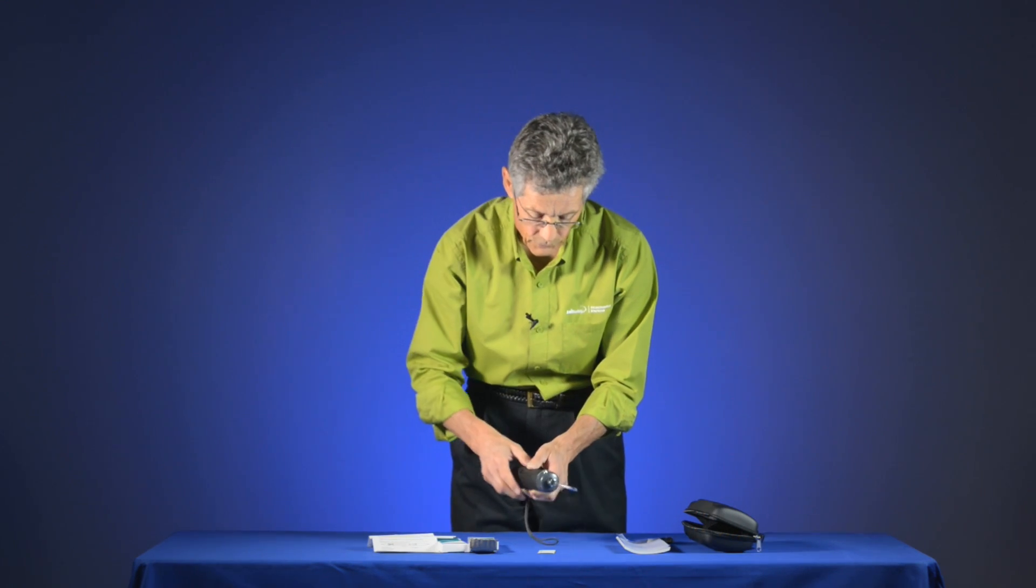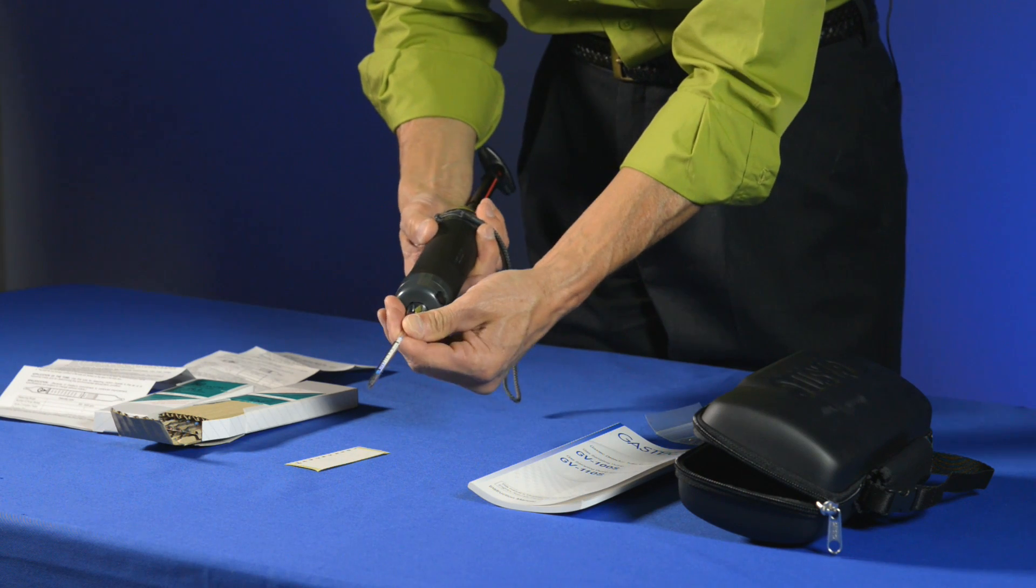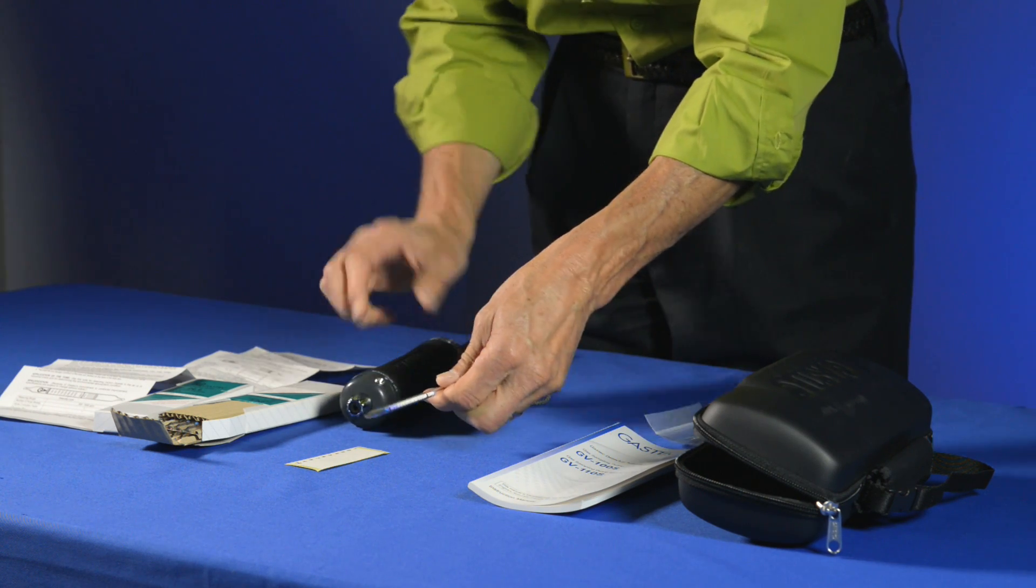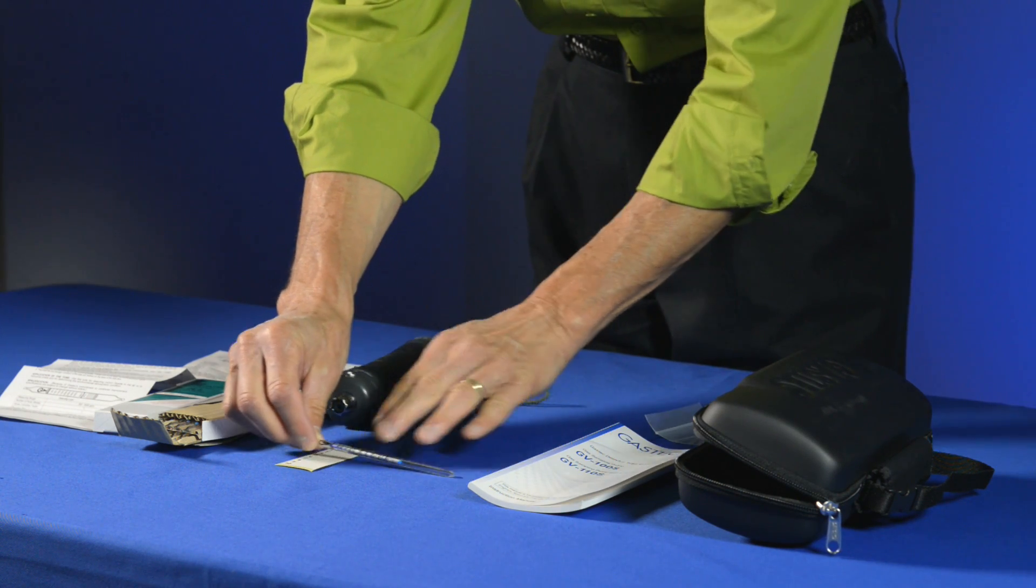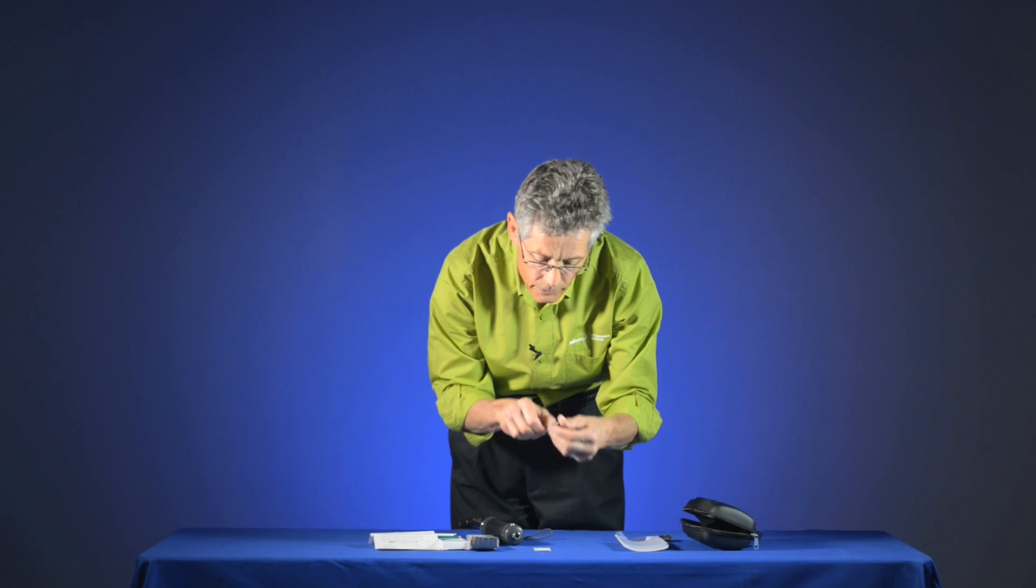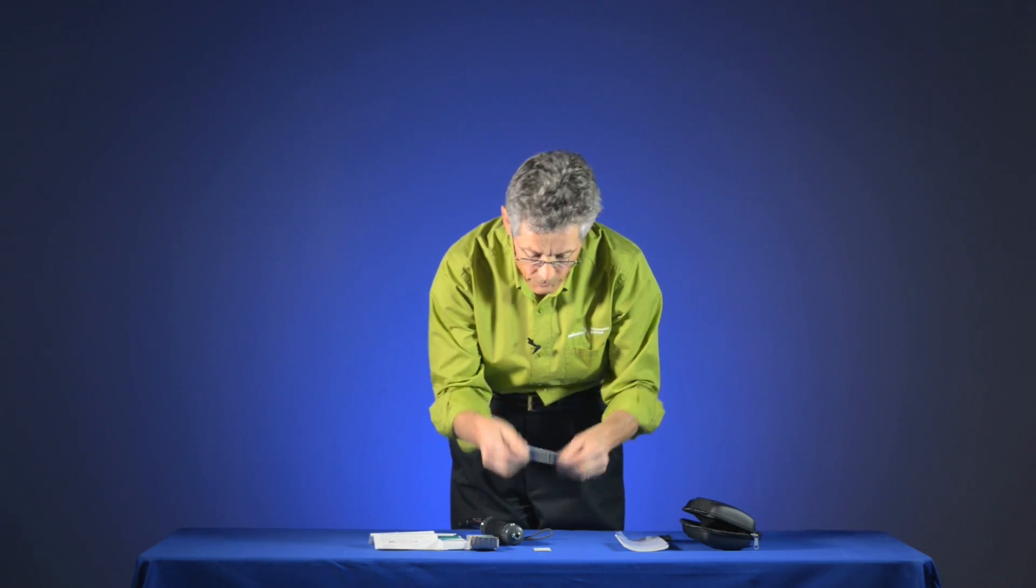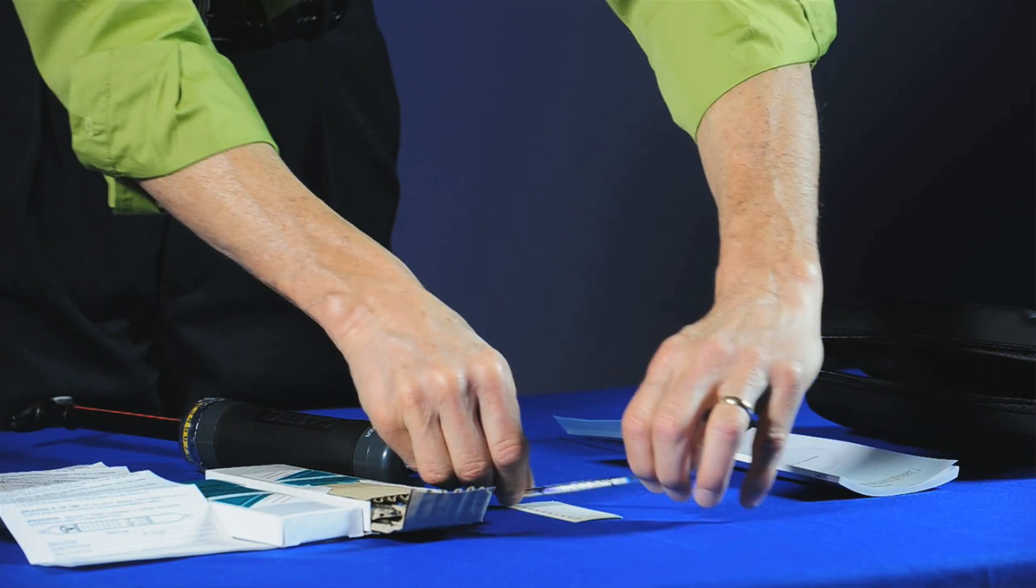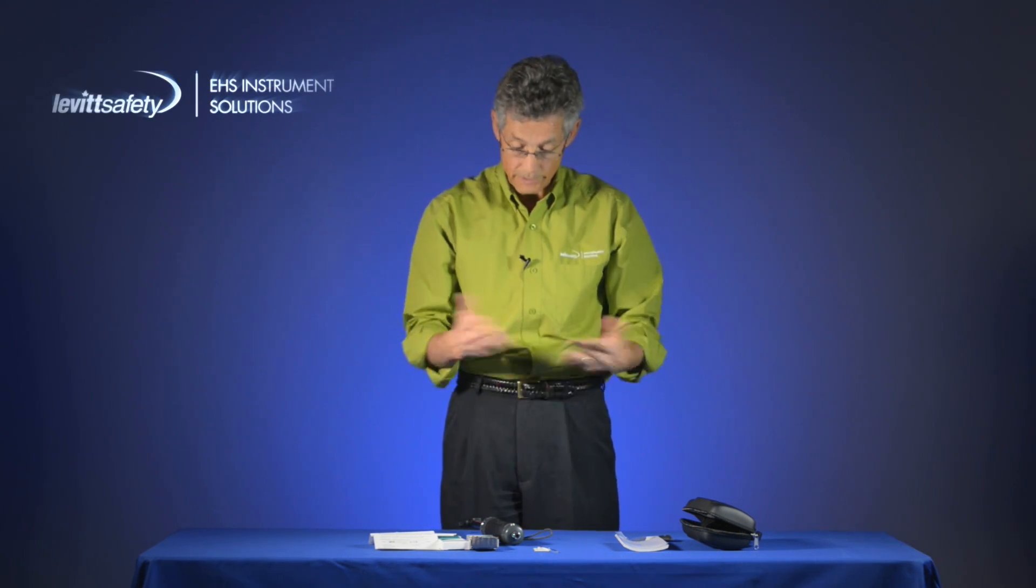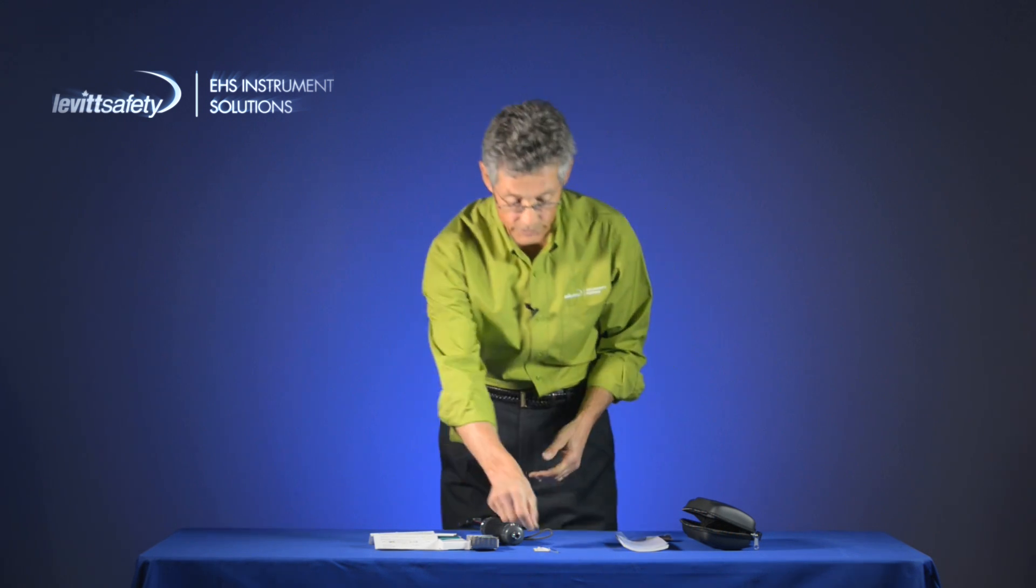So the pump stroke has been completed. I can take it out of the tube holder. And so my GasTech tube now reads a concentration of about 1,000 parts per million. So I know with confidence that the concentration of carbon dioxide is 1,000 parts per million right here and right now. And that's how you use the detector tube system.